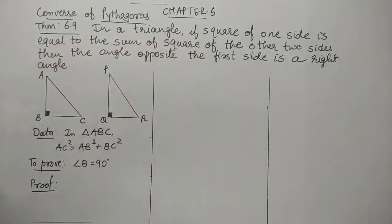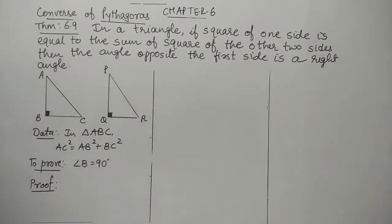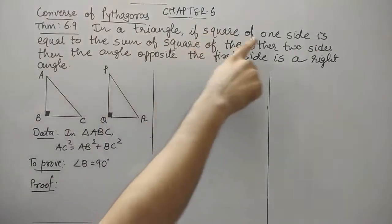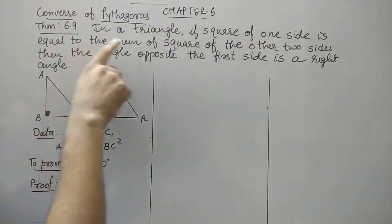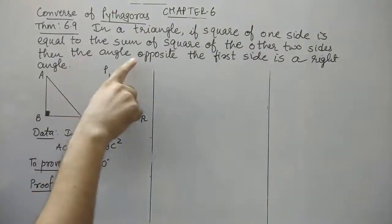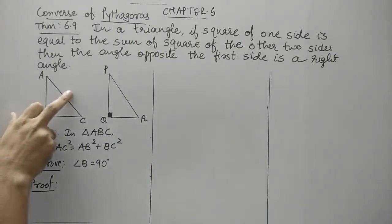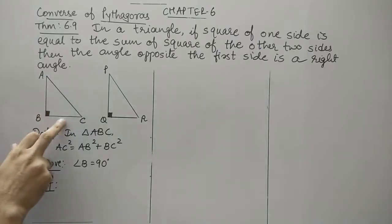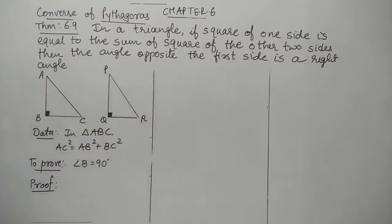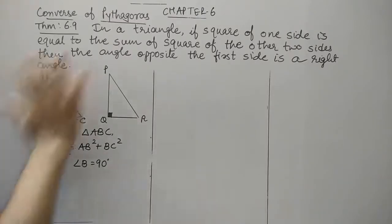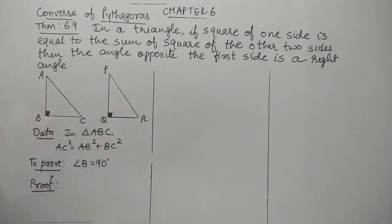Let us read the statement. In a converse, the data of the original theorem becomes the conclusion and vice versa. So the converse states: in a triangle, if the square of one side equals the sum of the squares of the other two sides, then the angle opposite to the first side is always a right angle. So if AC² = AB² + BC², then angle B, which is opposite to AC, is a right angle — that is what we have to prove.